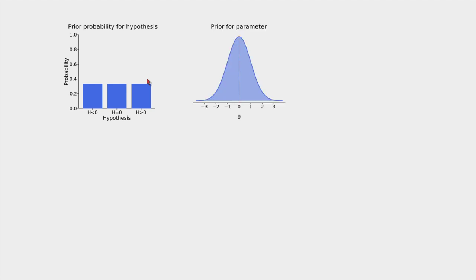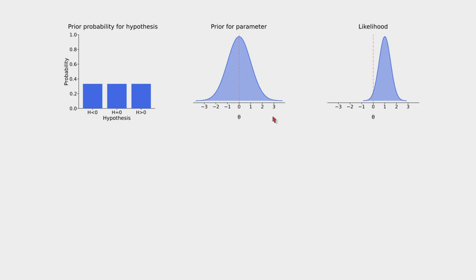The second step is to come up with a prior for our parameter — this is a little confusing because we have two priors. This prior is for our effect size, which I'll use theta to refer to throughout. We're modeling the prior as a normal distribution, saying that effect sizes less than minus three or greater than positive three are very unlikely. Then we take our data and analyze it, getting a likelihood. This tells us, given the data, which values of the effect size are more plausible. We can see here that the distribution is shifted to the right, towards positive values, and large negative values are very unlikely.